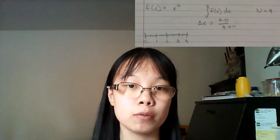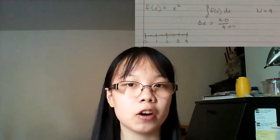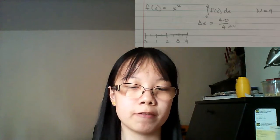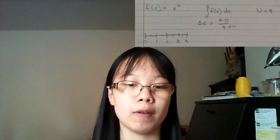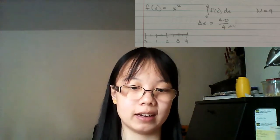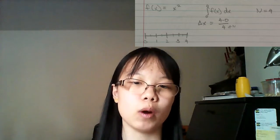And another important information we'll need is delta x, which we'll get from 4 minus 0, which is the bound for the integral, divided by 4, which is n, and we get 1. So, delta x equals 1.